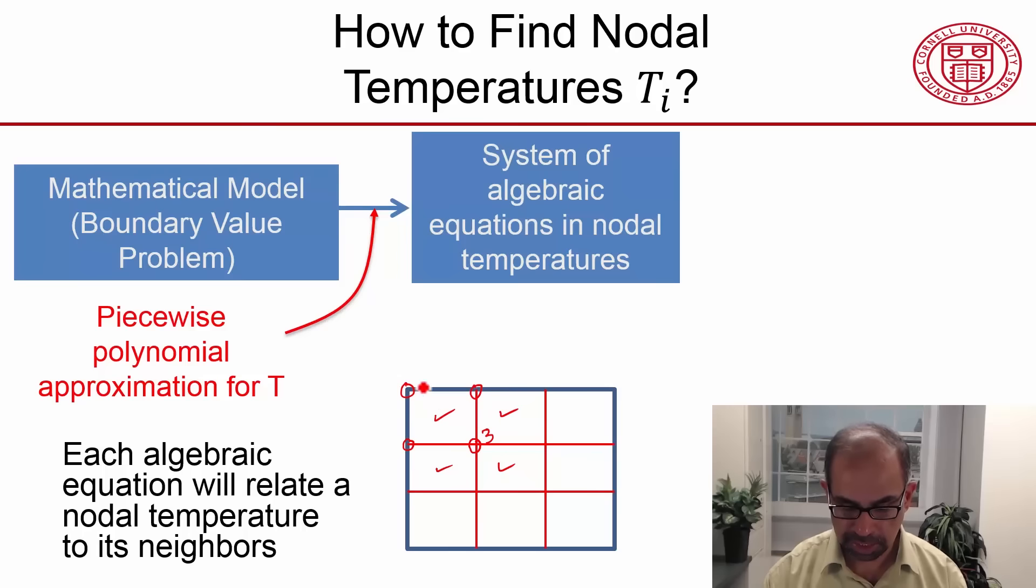So this element is attached to these four nodes, this element is attached to these four nodes, and then you have these nodes coming in and these nodes. Which means that the algebraic equation at this node will relate T3 to these other values.